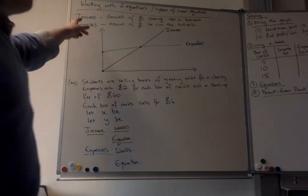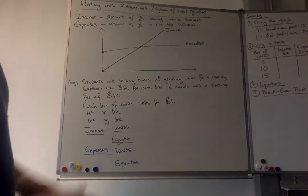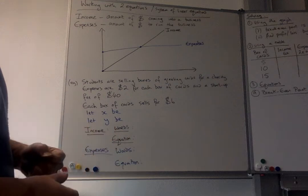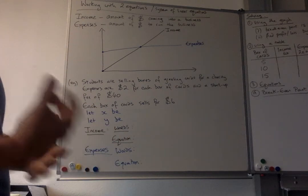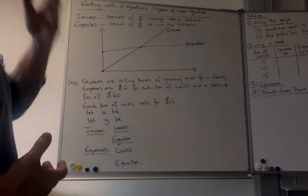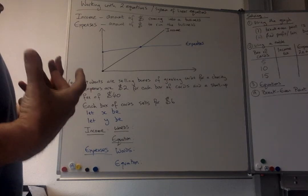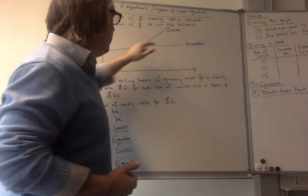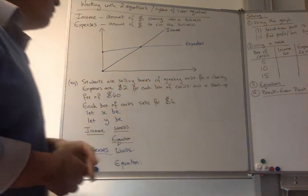So first of all you need to know what income means. Well income is the amount of money, I put a dollar sign there, coming into a business, and the expenses is the amount of money you spend to run your business. And what we're going to end up when we've got our linear system is this would be the income line and this is going to be the expenses line, which I've already drawn on.